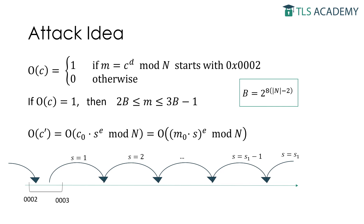The algorithm is based on the malleability of the RSA encryption scheme as mentioned earlier. Because of this, an attacker can repeat this query with a factor S that is incremented in every step that the Oracle outputs a 0. Once the adversary has found an S for which the Oracle outputs 1, we learn that M0 times S minus R times N is between 2B and 3B. This allows the attacker to reduce the set of possible solutions. By iteratively choosing new values for S and querying the Oracle, the attacker narrows down the interval which contains the original M0 value, repeating these steps until only one solution in the interval is left.